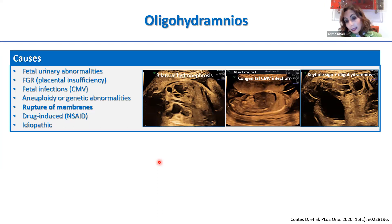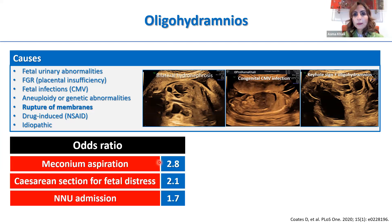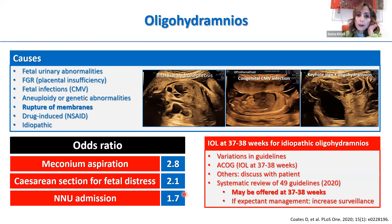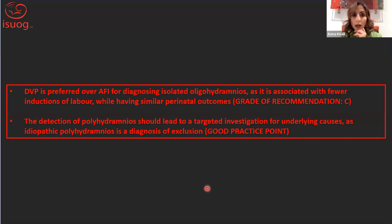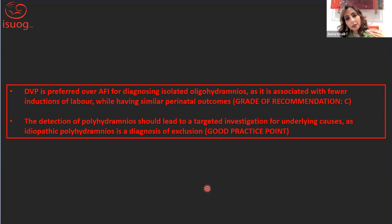A proportion of cases are idiopathic. Oligohydramnios is associated with adverse outcomes: the risk of meconium aspiration and other issues is about 3 times higher, caesarean section for fetal distress is twice as high, and NICU admission is twice as high. Common practice is to induce labour at 37–38 weeks in cases of idiopathic oligohydramnios, though there is variation in the guidelines. The recommendation is that DVP is preferred over AFI for diagnosing isolated oligohydramnios, as it is associated with fewer inductions of labour while having similar perinatal outcomes. Detection of polyhydramnios should prompt targeted investigation for an underlying cause, as idiopathic oligohydramnios is a diagnosis of exclusion.